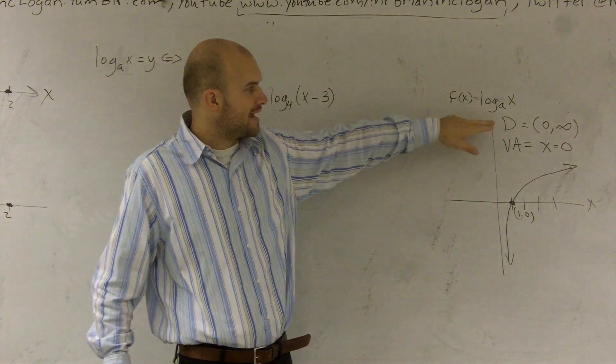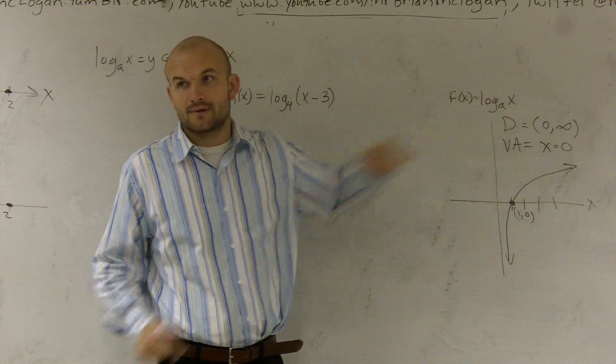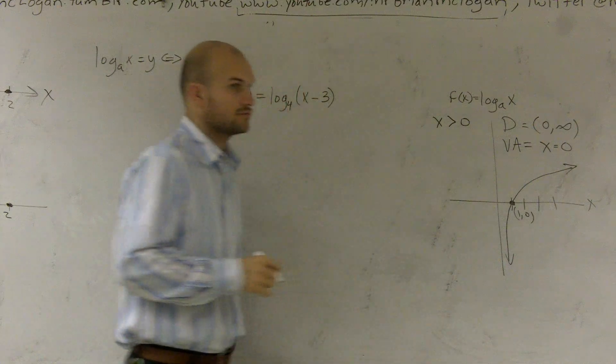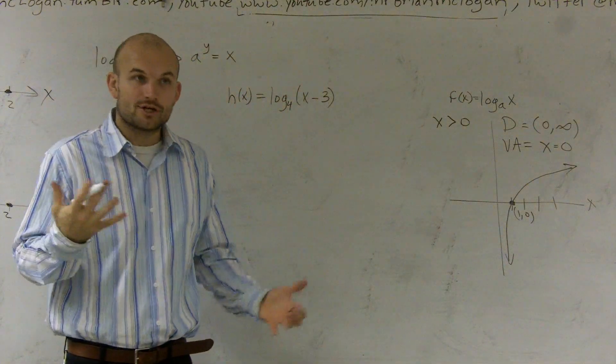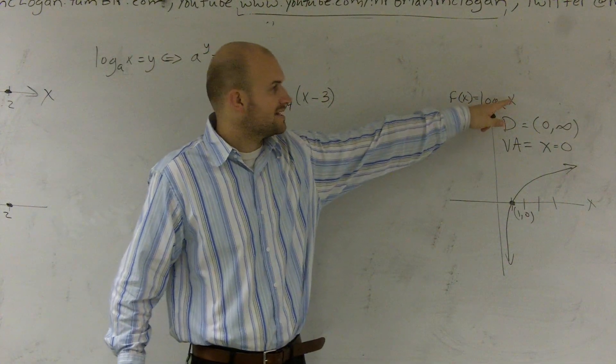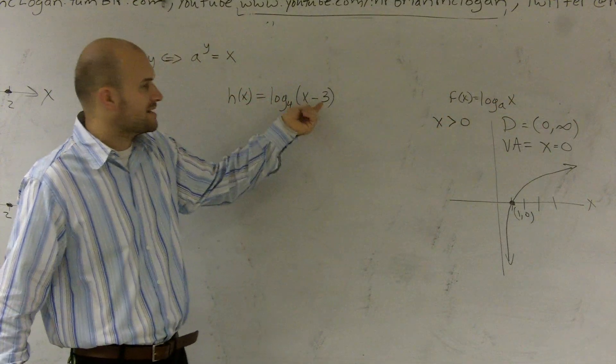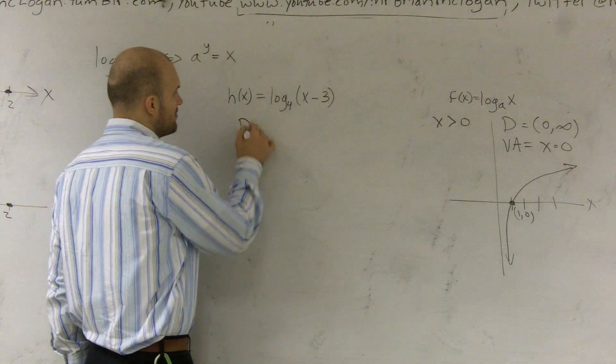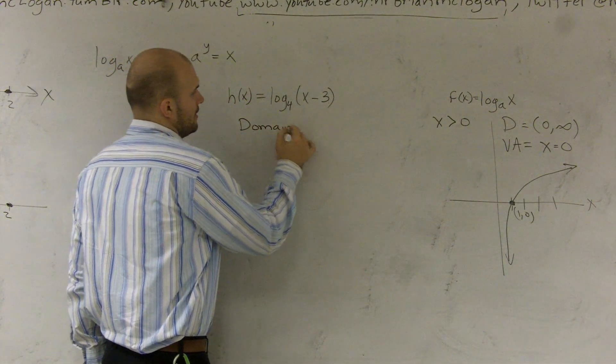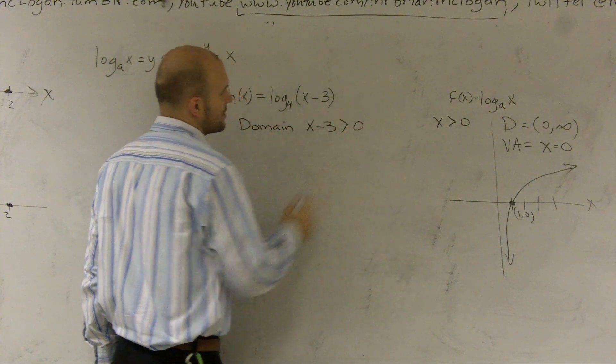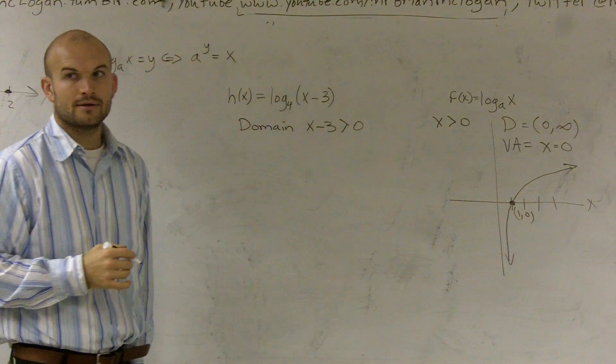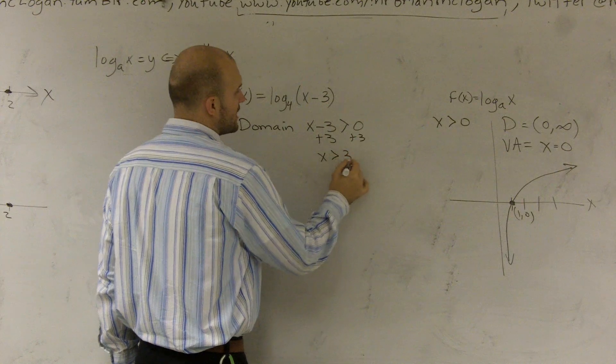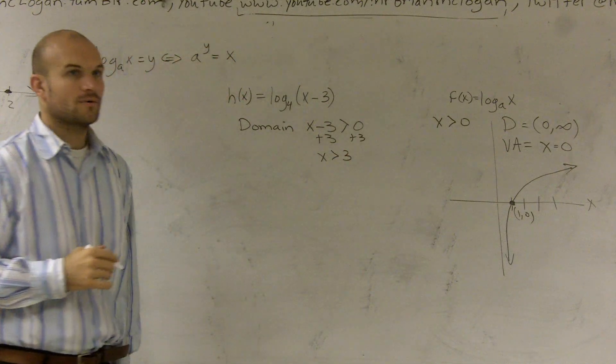So here's a way that we like to kind of represent this. If I say my domain, I say it's 0 to infinity, right? That means my x values are greater than 0, correct? So what you're going to do is whatever your x is, that's like x is greater than 0. What I'm going to do is I'm going to take whatever's inside of my function, and I'm just going to make that greater than 0. So I'll say my domain is x minus 3 greater than 0.